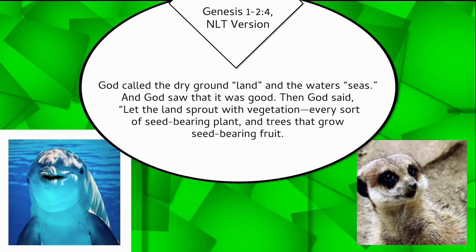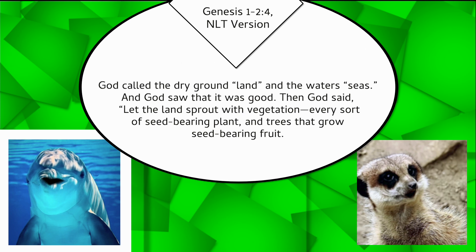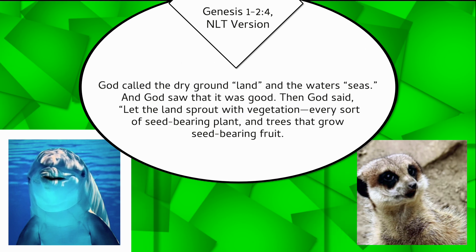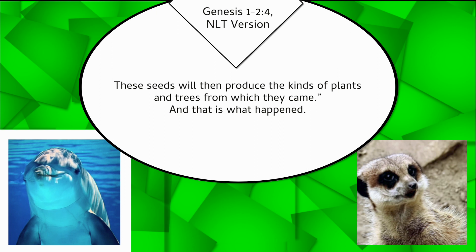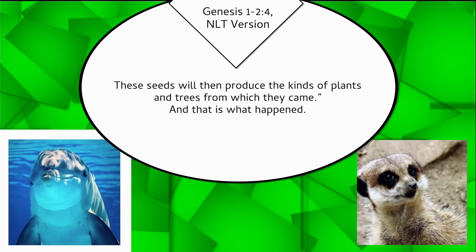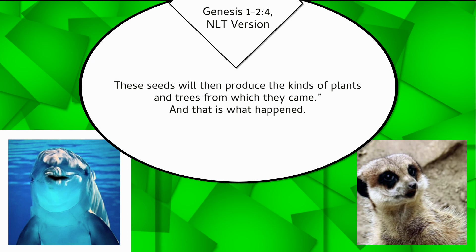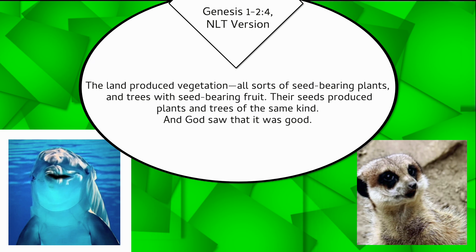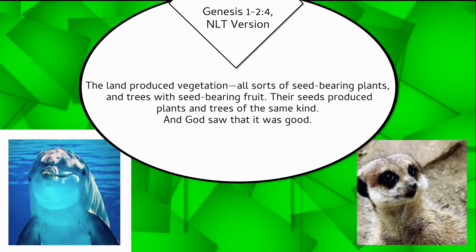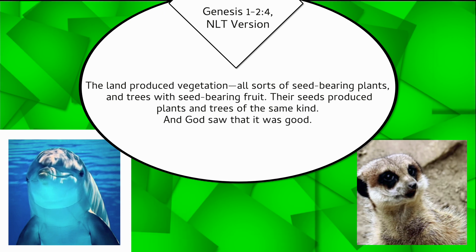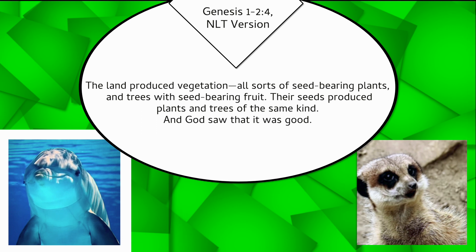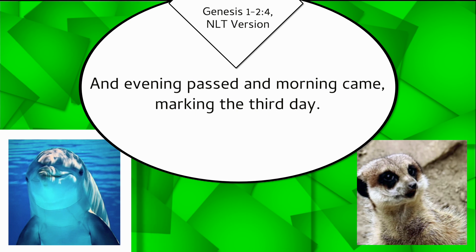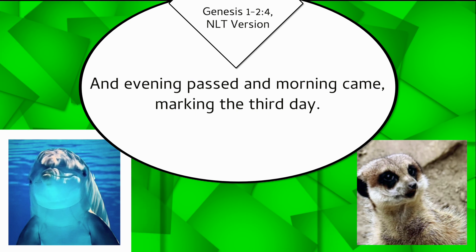Then God said, Let the land sprout with vegetation, every sort of seed-bearing plant, and trees that grow seed-bearing fruit. These seeds will then produce the kinds of plants and trees from which they came. And that is what happened. The land produced vegetation, all sorts of seed-bearing plants, and trees with seed-bearing fruit. Their seeds produced plants and trees of the same kind. And God saw that it was good. And evening passed, and morning came, marking the third day.